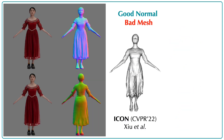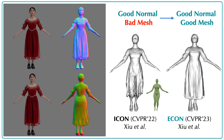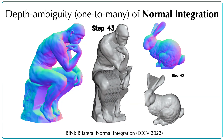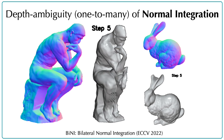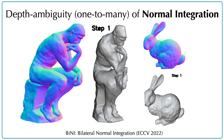Before delving into ECON, let us first examine the normal estimates and mesh reconstructions produced by ICON. ICON conditions on a parametric 3D body model in estimating the normals and reconstructing the mesh. While ICON estimates accurate normals, it gets the shape wrong by relying too much on the underlying body, resulting in noticeable artifacts for the skirt region between the legs. In contrast, a classical way to estimate shape from normals is using integration. However, such an approach is highly sensitive to noise in the normals.